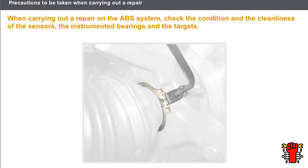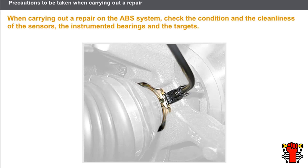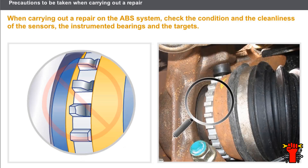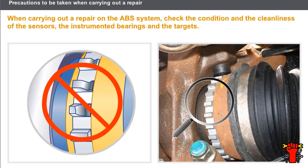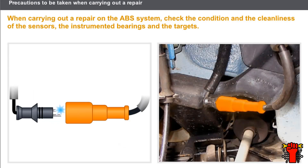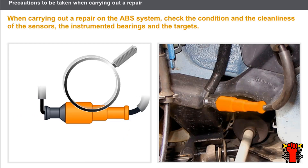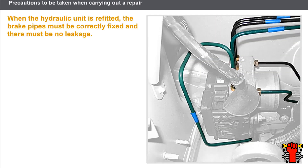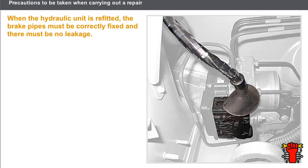Certain precautions must be taken when carrying out a repair on the ABS system. Check the condition and cleanliness of the sensors, the instrumented bearings, and the targets. Check to make sure that none of the targets are damaged. Check the condition of the wiring and the cleanliness of the electrical connectors, and take care to follow the correct routing of the wiring and connectors, as the reliability of the ABS system depends on this. When refitting the hydraulic unit, check that the brake pipes are correctly fixed and that there is no leakage of fluid, and that the wiring connection shows no traces of oxidation or overheating.